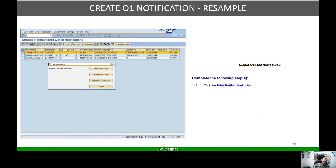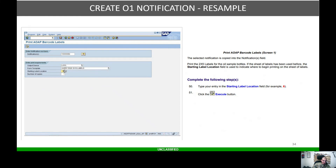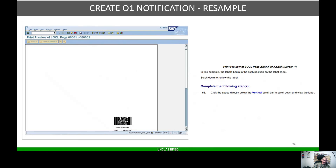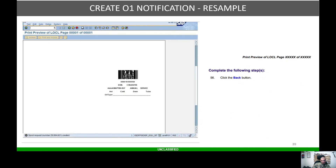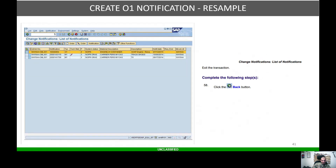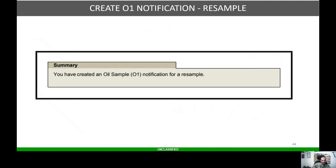Now click the Other Functions button again and select Print Label. Type your entry, start the label — whatever six — then click Execute. This is going to print your label. Hit Print Preview and there's your label. Once done, hit Back, Back again, Back, and Back once more — and you've completed this transaction. In summary, you've created an O1 oil sample notification for a resample in the system. This is part nine — we'll be on part 10 hopefully later today. As always, go Ordnance.